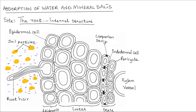Hello and welcome. In this lesson we try to understand how absorption of water and mineral salts takes place in plants. The site for absorption of water and mineral salts is the root. As you've seen earlier, the root is structurally adapted to facilitate the process of absorption. In this diagram here we see the various types of tissues present in the root, and we're going to relate the structure to this process of absorption that takes place in the roots.